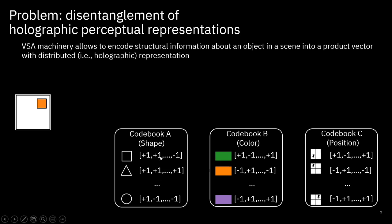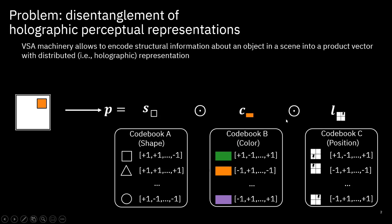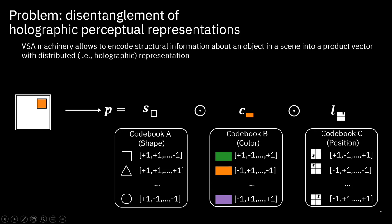The good thing about the VSA machinery is that we can generate the vectors for free using the random Bernoulli process, for example. Once we identify the corresponding attributes for each codebook, we can bind them together using this binding operation to generate a vector representation for the given image. So far we have encoded the different attribute values together to create a composite representation for the object. We call this the P vector — the product vector — because it represents the product of three different attributes.